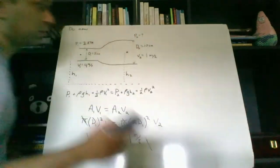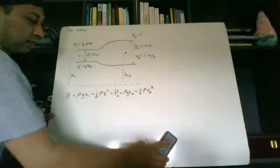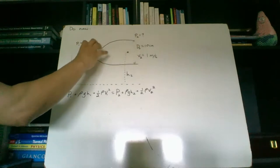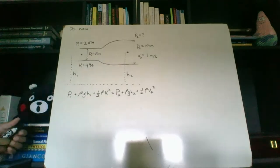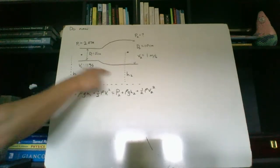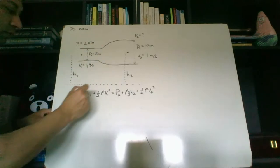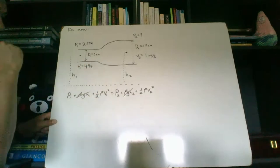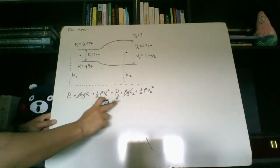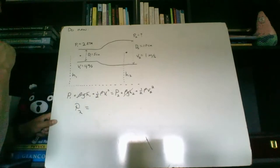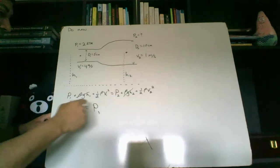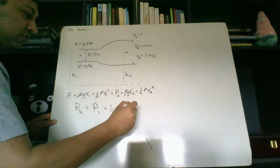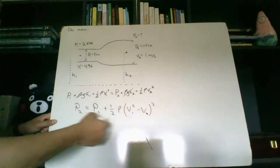Now that we have that, the next thing we want to do is solve for pressure 2 using our Bernoulli equation. The pressure here and here is going to be different since it's narrower on one side and wider on the other, so that stays. However, H1 and H2 are the same height, so those terms go away. We're left with the pressure and velocity terms. So pressure 2 is going to equal pressure 1 plus one-half the density times (V1 squared minus V2 squared).